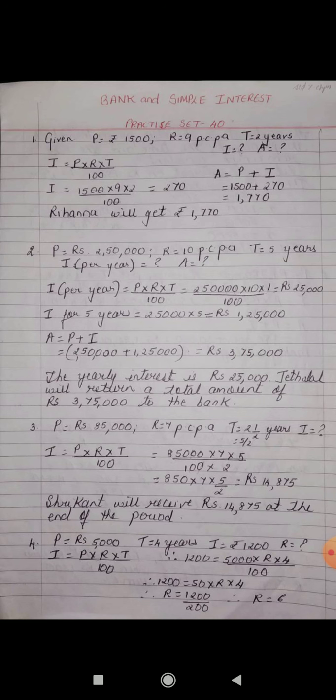Third problem: Shrikant deposited 85,000 rupees for two and a half years at 7% per annum in a savings bank account. What is the total interest he received at the end of the period? Principal = 85,000, rate = 7% per annum, time = 2.5 years = 5/2 years. The formula is I = P × R × T / 100, so I = 85,000 × 7 × 5 / (100 × 2).